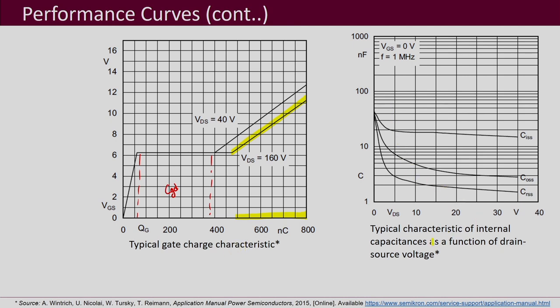This graph shows the capacitances — how input capacitance C_ISS, output capacitance C_OSS, and reverse transfer capacitance C_RSS vary with drain-to-source voltage V_DS. The input capacitance is not varying a lot when V_DS is low, but your reverse transfer capacitance varies a lot as V_DS increases, and output capacitance also varies with V_DS.